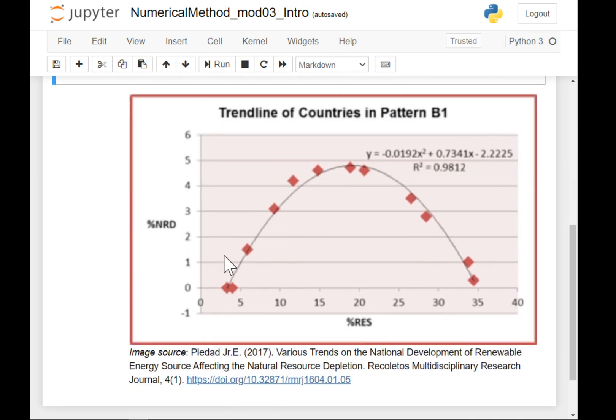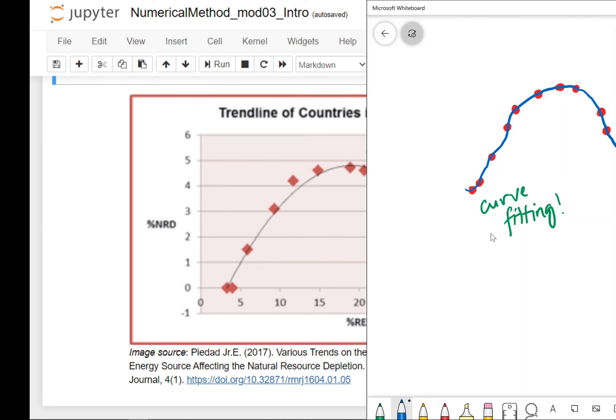This is an example of interpolation. In this case, we have a quadratic function. For curve fitting, you can see here the curve does not necessarily pass through all points. Curve fitting should follow the general trend, while interpolation passes through all the points.